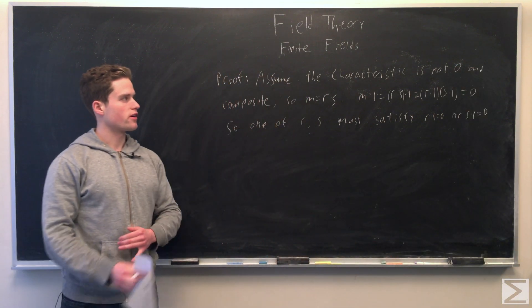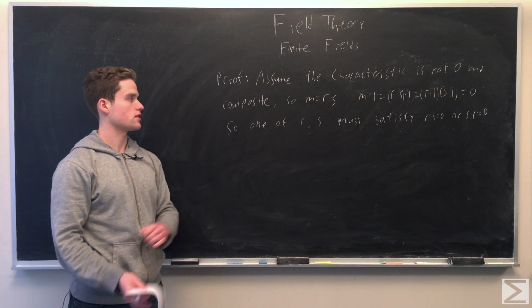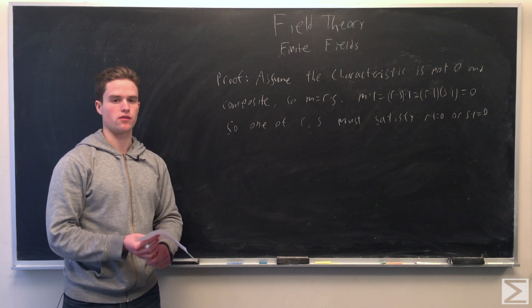We're going to assume the characteristic is not zero and also the characteristic is composite. So we have m equals r times s where r and s are both greater than or equal to 2.